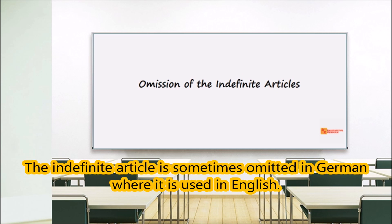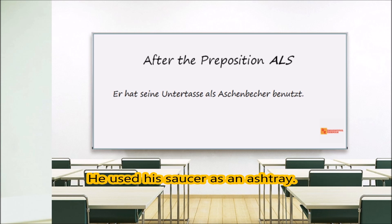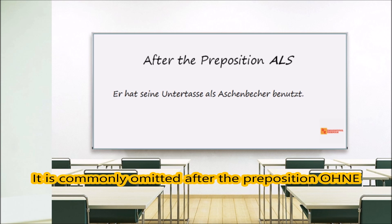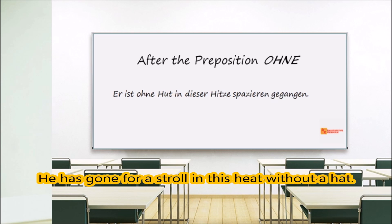The indefinite article is sometimes omitted in German where it is used in English. It is usually omitted after the preposition 'als'. For example: 'Er hat seine Untertasse als Aschenbecher benutzt.'